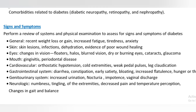Cardiovascular: orthostatic hypotension, cold extremities, weak pedal pulses, leg claudication. Gastrointestinal system: diarrhea, constipation, early satiety, bloating, increased flatulence, hunger or thirst. Genitourinary system: increased urination, nocturia, impotence, vaginal discharge. Neurologic: numbness, tingling of the extremities, decreased pain and temperature perception, changes in gait and balance.